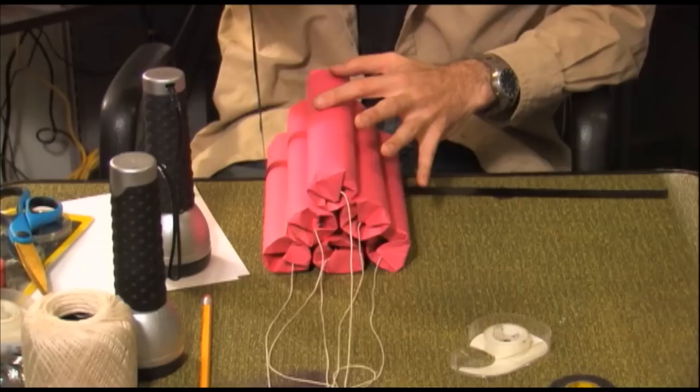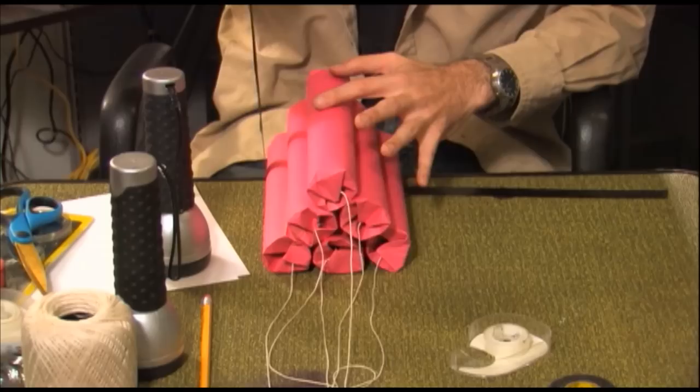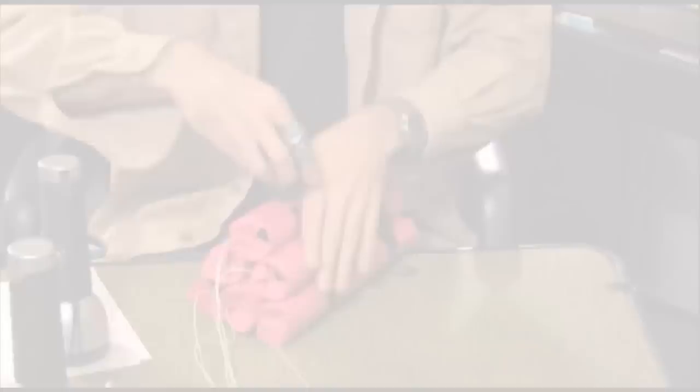Cut 6 lengths of string and tape each to the inside flap of a paper towel roll. Use the electrical tape to bind the 6 tubes into a pyramid shape.